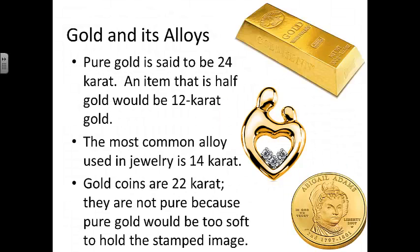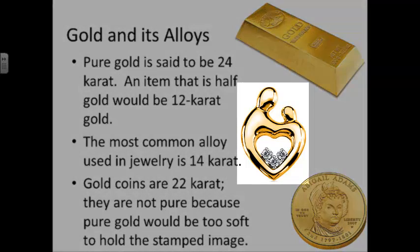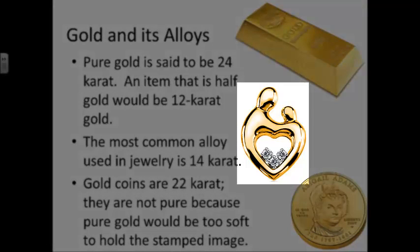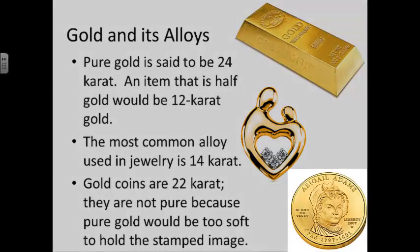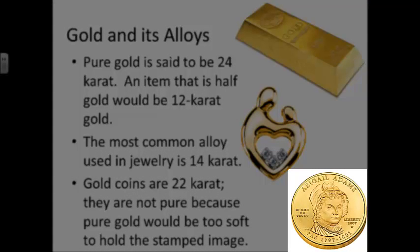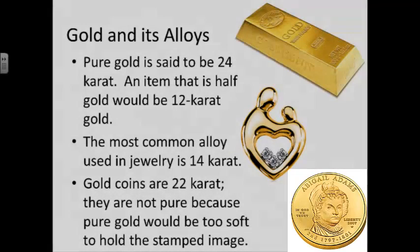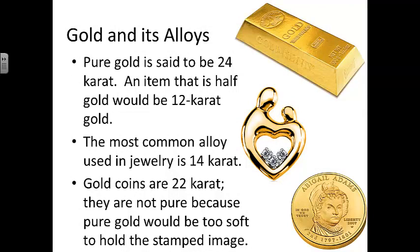Gold is an element; however, the gold in the jewelry you might be wearing — such as a class ring or earrings — is not actually pure gold. Pure gold is said to be 24 karat gold. An item that's only half gold would be 12 karat gold. The most common alloy used in jewelry is 14 karat, though 10 karat gold is cheaper because it has a lower quantity of gold mixed in. Gold coins are actually 22 karat — not even pure gold — because pure gold would be too soft to hold a stamped image for long.